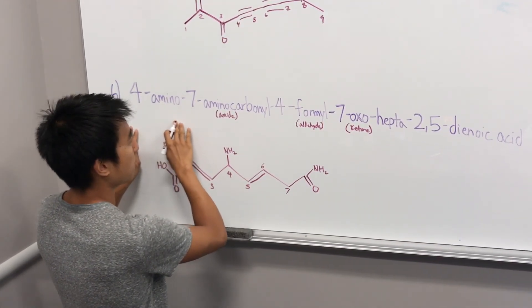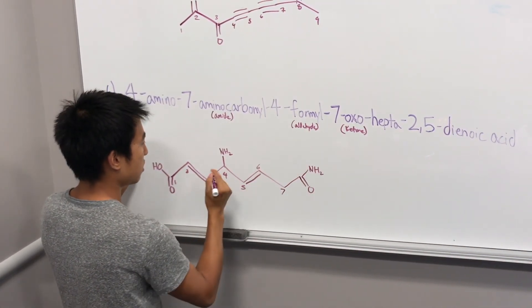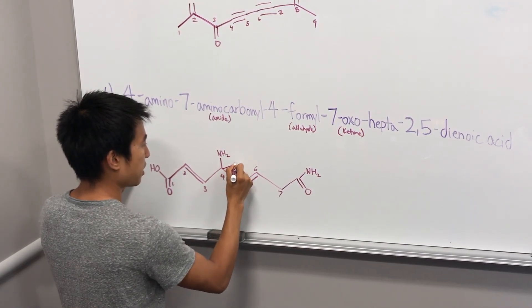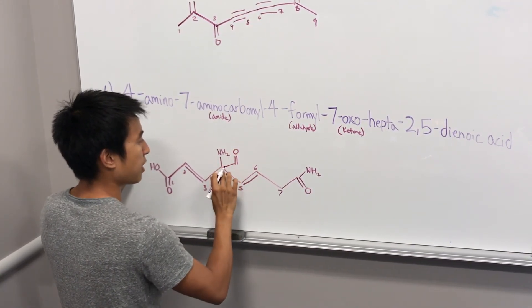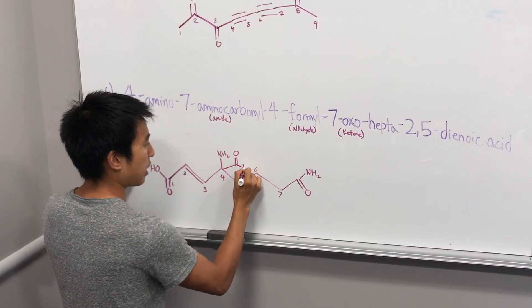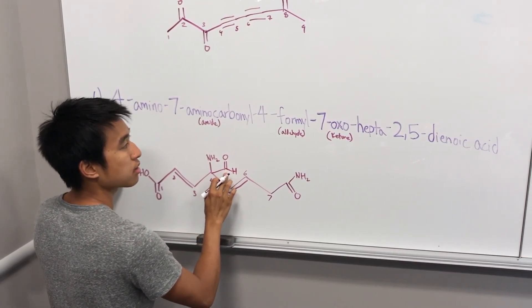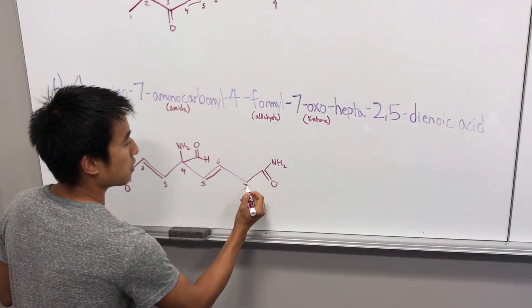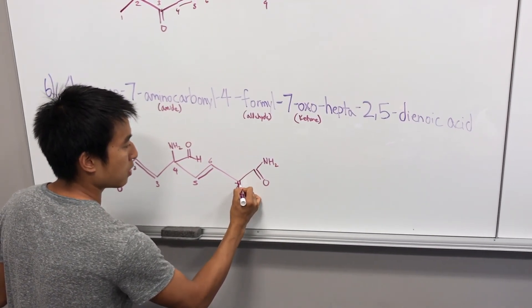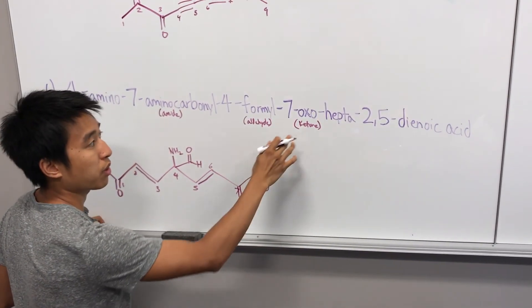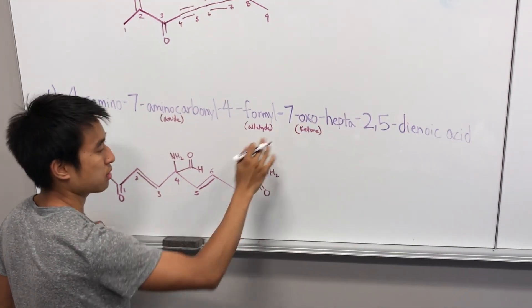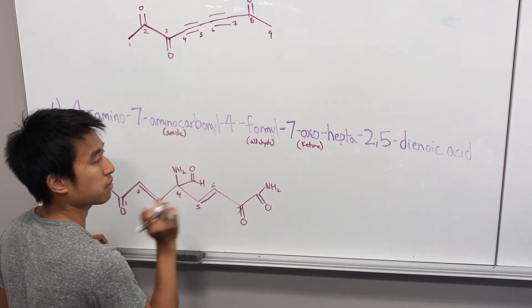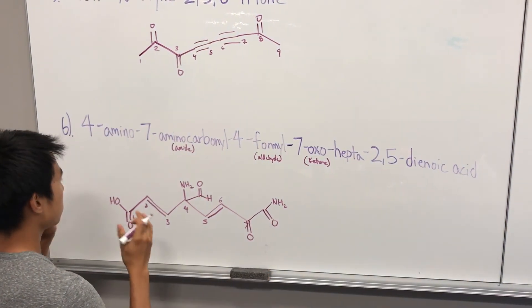Anytime you see aminocarbonyl, remember carbonyl comes in first, and it's a branch off. 4-formyl, so we have an aldehyde group coming up here. Same thing, bond first, and then aldehyde. And then 7-oxo. For ketones, they're a little bit different. They are exactly at where the number is. So ketone right off of seven. This should be our structure.